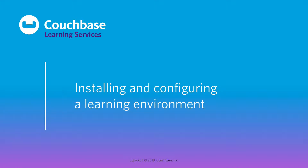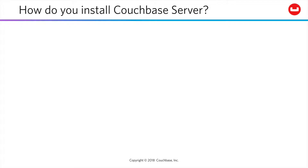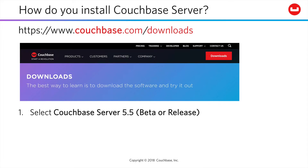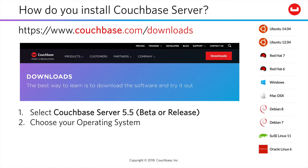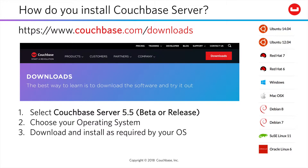Let's get started by configuring the software and assets you'll use to complete this course. To install Couchbase Server, go to couchbase.com/downloads, choose your operating system, and then download and install the assets as required by your operating system.